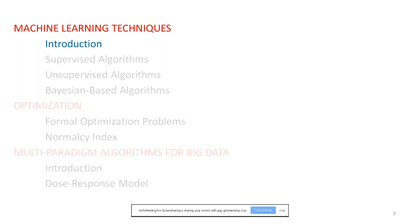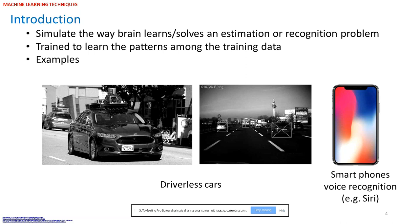Machine learning algorithms are inspired from the ability of the human brain to learn or solve an estimation or recognition problem. They need a training phase to be ready, like a student who needs to study course materials to be prepared for the exam day. Such algorithms have been employed in developing driverless cars to recognize lanes, adjacent vehicles, traffic signs, speed limits, and traffic lights. Another example is smartphones with facial recognition and smart voice recognition systems like Siri on iPhone.